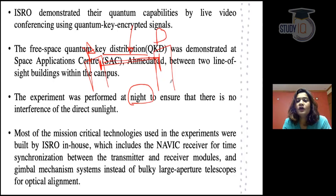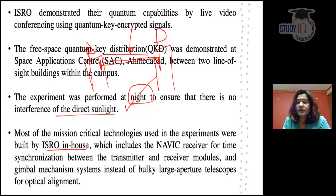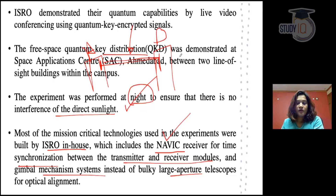The activity was performed at night because it is based on quantum, and there should not be any interference. There should be minimum errors, so there should be no interference at night. This is a very mission-critical technology, built by ISRO in-house. They used a NAVIC receiver for time synchronization between the transmitter and receiver module from A to B. They also used a Gimbal Mechanism System and their own telescope for optical alignment to verify that the quantum lines and qubits are aligned.